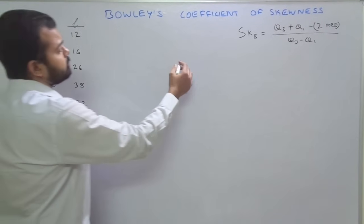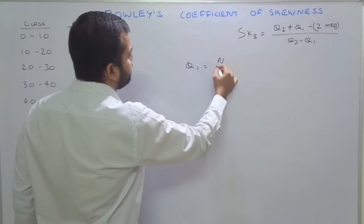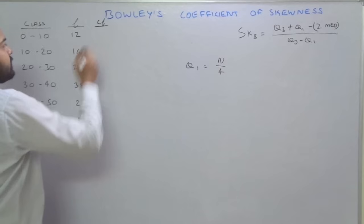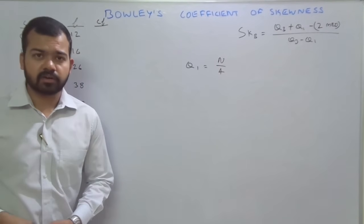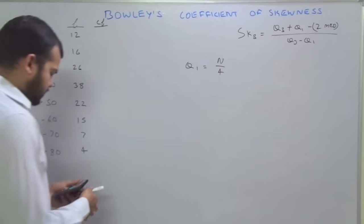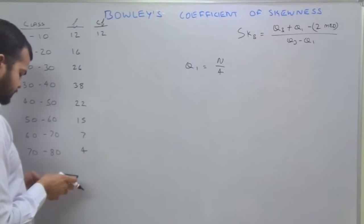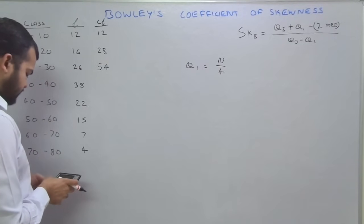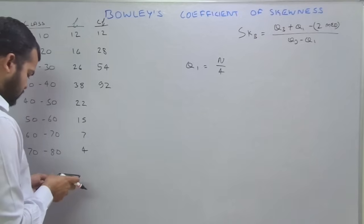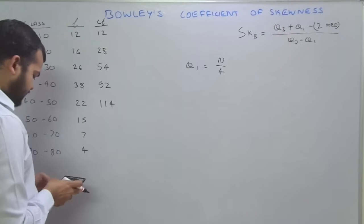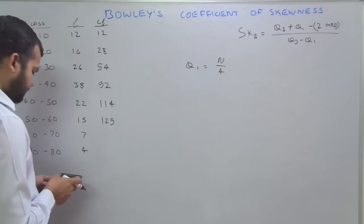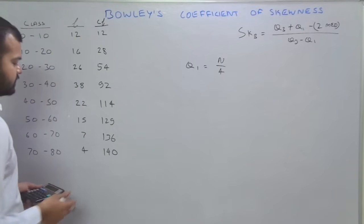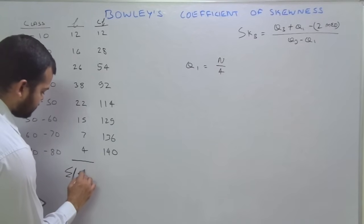We will start with Q1, which is N by 4. But first we need to calculate cumulative frequency from the series. The cumulative frequencies are: 12, 12 plus 16 is 28, 28 plus 26 is 54, 54 plus 38 is 92, 92 plus 22 is 114, 114 plus 15 is 129, 129 plus 7 is 136, and 136 plus 4 is 140. So the total summation of f is 140.